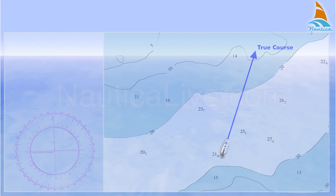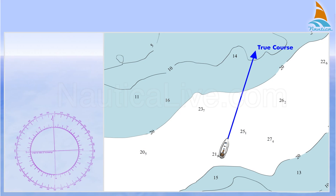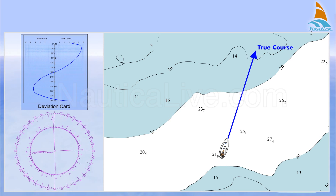In the previous lessons, you learned to calculate the magnetic variation and also to find out the magnetic deviation by using the deviation card. Let's assume that the true course plotted on the chart is 020 degrees, the variation is 3 degrees west, and the deviation is 5 degrees east.